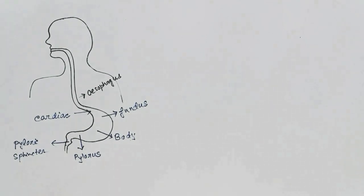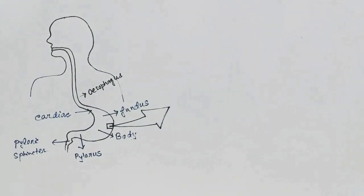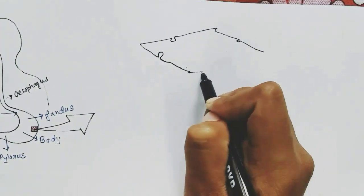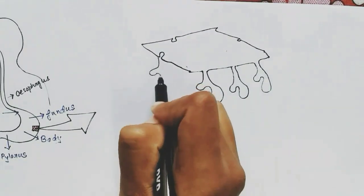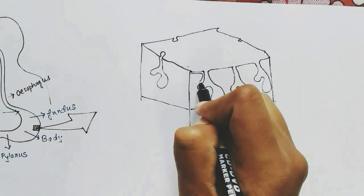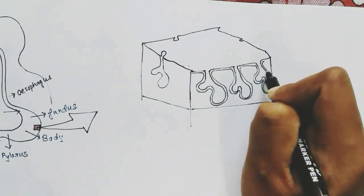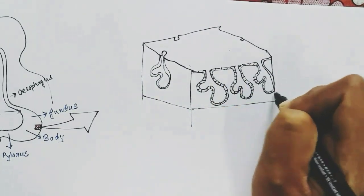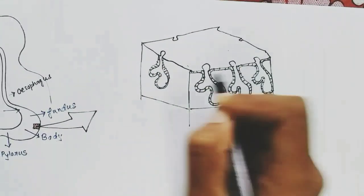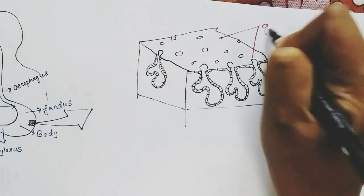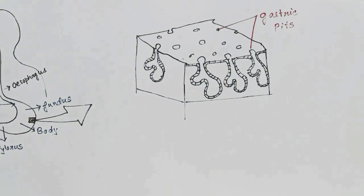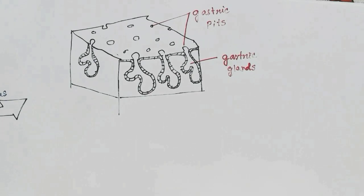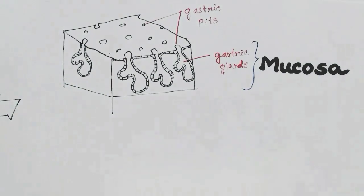If we zoom into the cut section, we will see how the stomach lining looks. The stomach has some invaginations, and these invaginations form the gastric glands of the stomach. These gastric glands are surrounded by specific cells, and the cavities in the stomach lining formed because of these gastric invaginations are called the gastric pits. This layer where the gastric gland is present is called the mucosa layer.